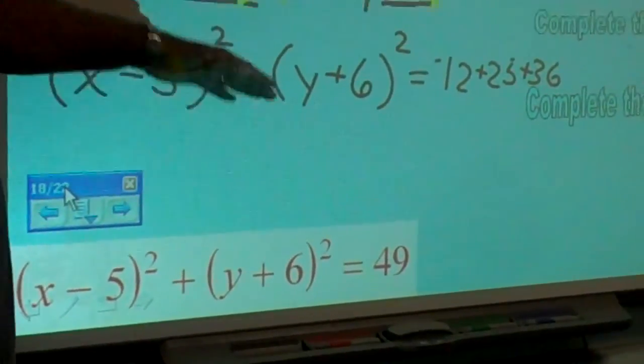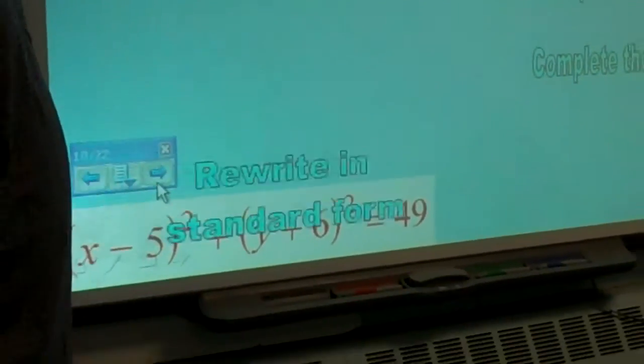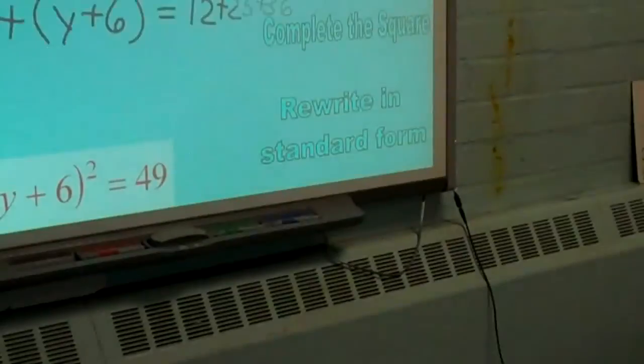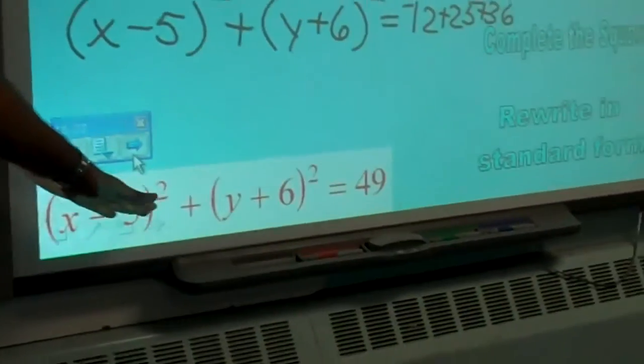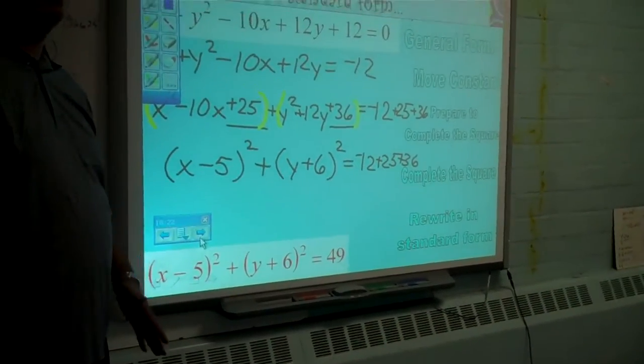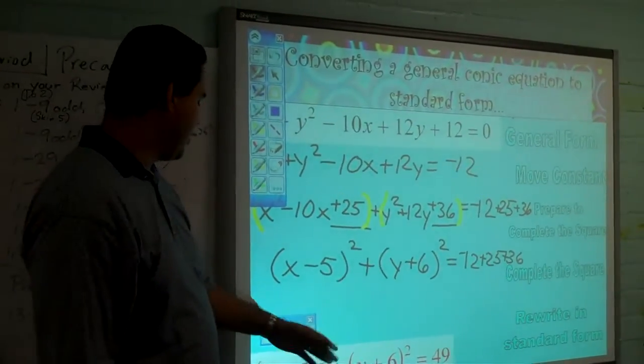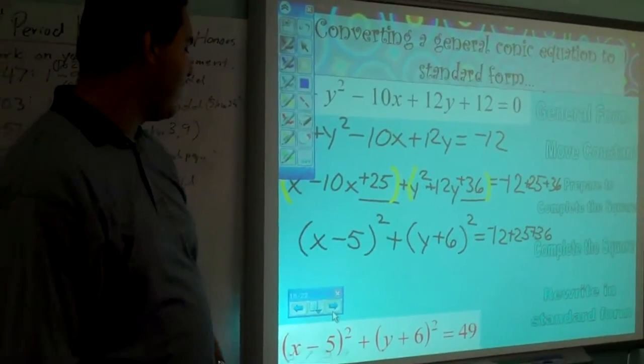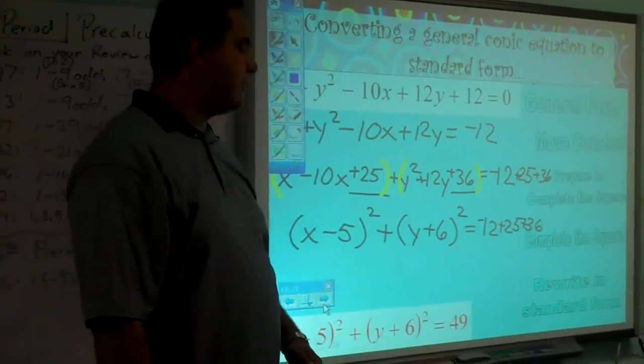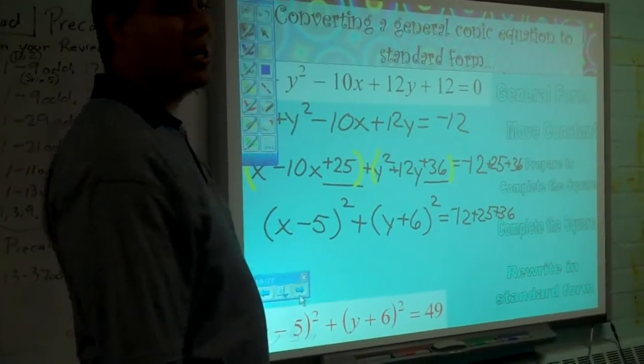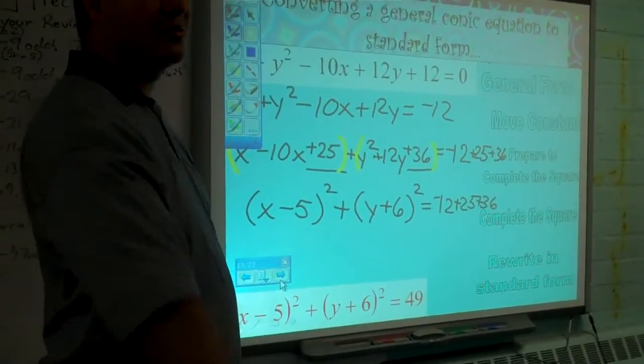So we have successfully converted general form into standard form. Then this becomes really easy to graph. It's so easy. Even Jesse can graph it. Because all he needs to know is that the center is 5, negative 6. The radius is 7. And he can create a graph. No problem. Right, Jesse? Good job, Jesse.